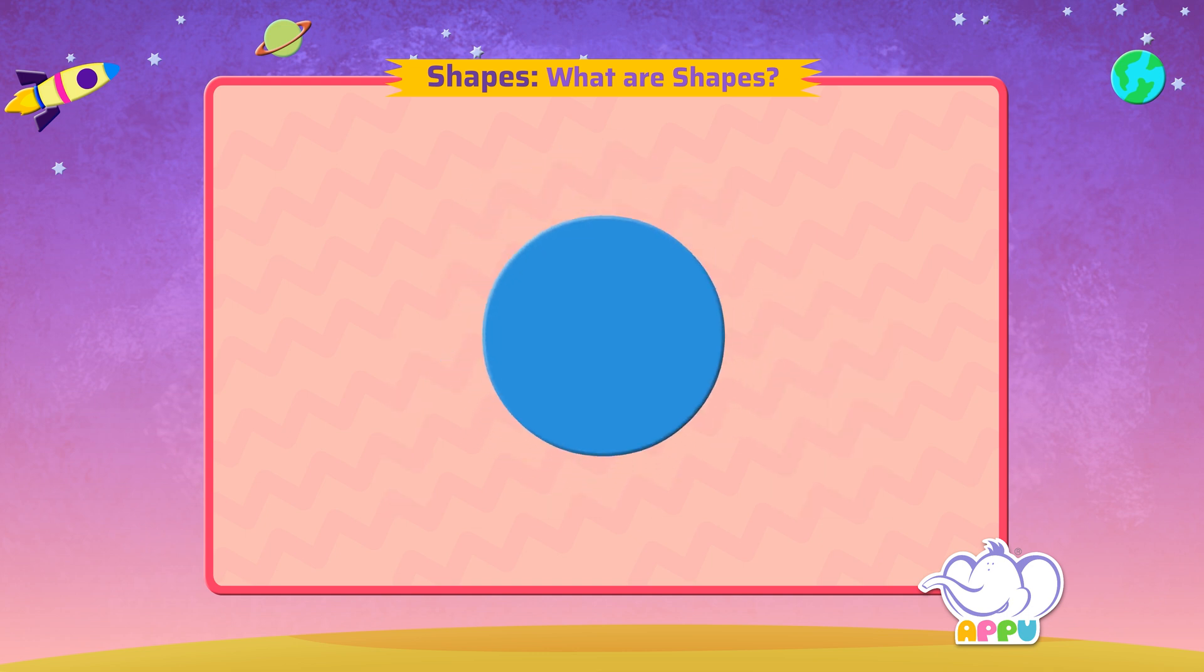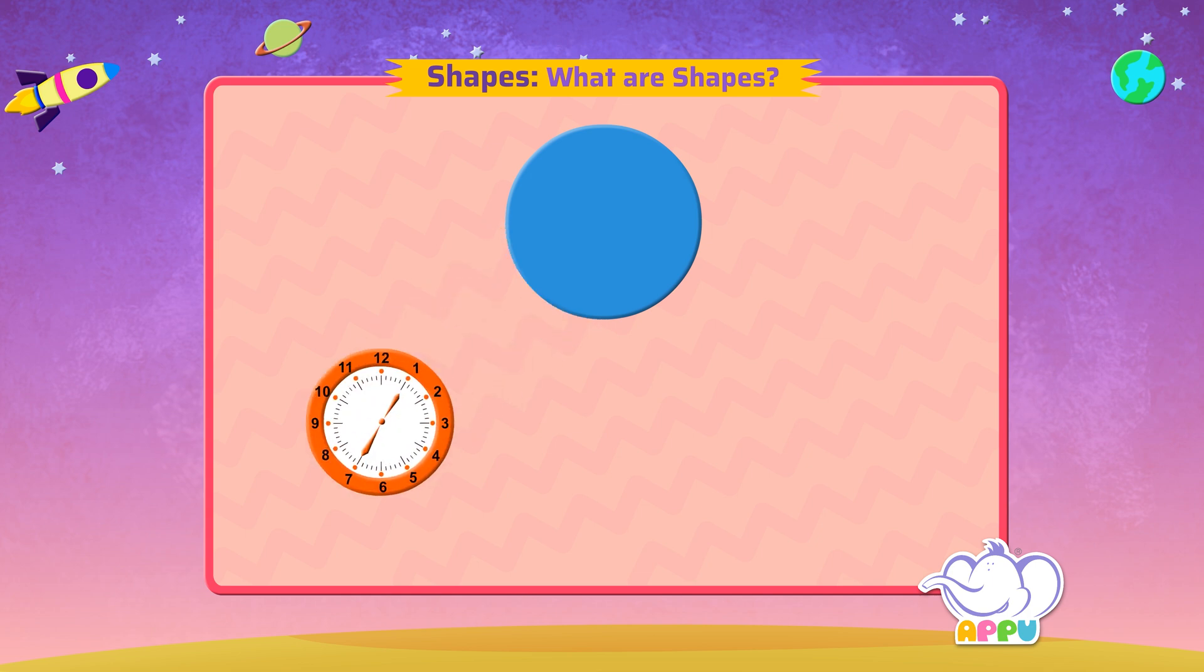Circle. A circle is round and has no sides. You can find it in a clock, sun, or a coin.